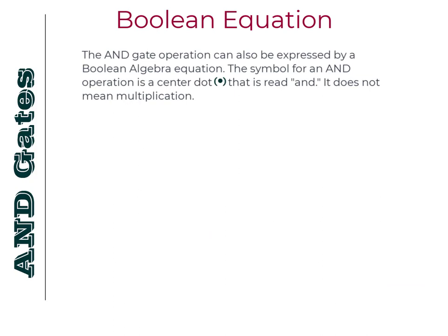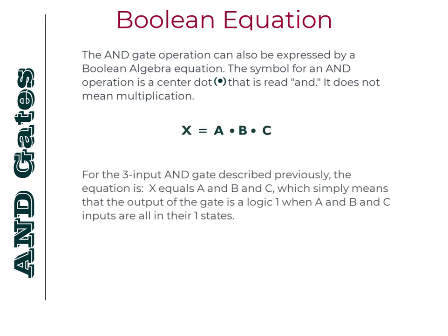The AND gate operation can also be expressed by a Boolean algebra equation. The symbol for an AND operation is a center dot that is read AND. It does not mean multiplication. For the three input AND gate described previously, the equation is X equals A AND B AND C, which simply means that the output of the gate is logic 1 when A AND B AND C inputs are all in their 1 states.